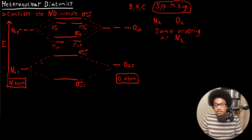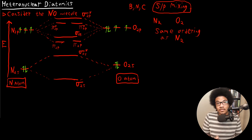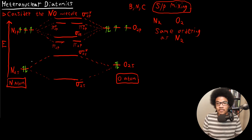Let's put in our electrons. For nitrogen we have five valence electrons: 2 in the 2s and 3 in the 2p. For oxygen we have six valence electrons: 2 in the 2s and 4 in the 2p. That's another difference in heteronuclear diatomic diagrams — you'll have an uneven amount of electrons on both sides. Five plus six gives us a total of 11 electrons to fill in.